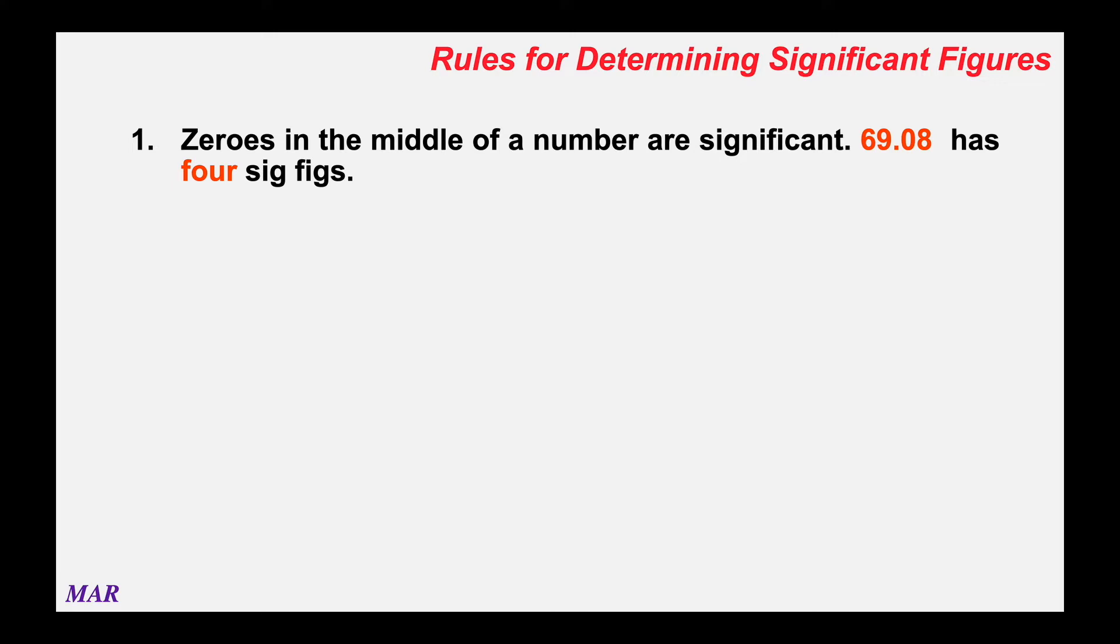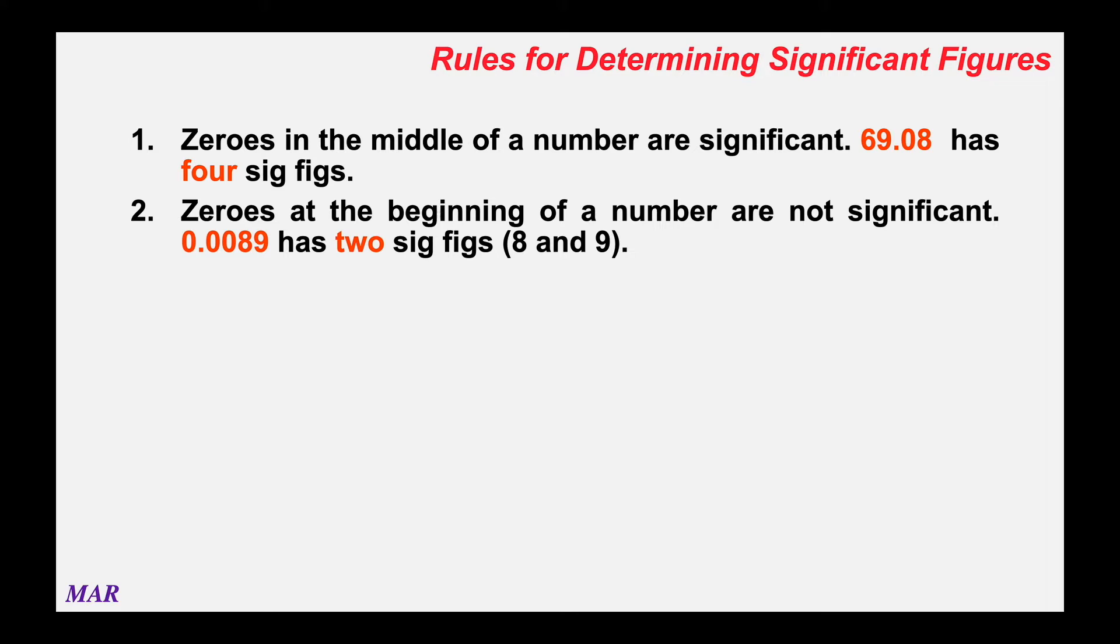The zeros are troublesome, though, because sometimes zeros count in a sig fig and sometimes they don't. If the zero is in the middle of non-zeros, it counts. So 69.08 would be four sig figs. If the zeros are at the beginning, then they don't usually count, they're called placeholders. So like .0089, we want to know where the 8 and the 9 is on the number line. That number has only two significant figures. If you know about scientific notation, you could write .0089 as 8.9 times 10 to the minus 3. Notice that all of those zeros go away in scientific notation.